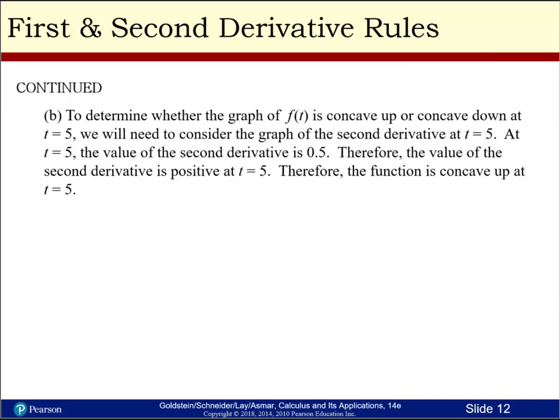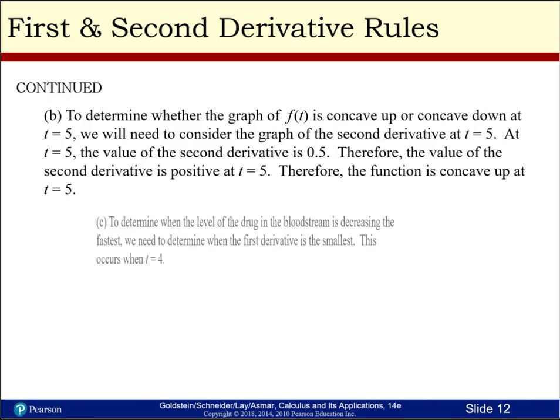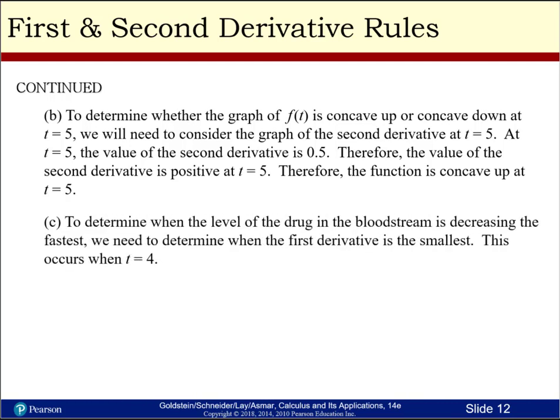To determine whether the graph of f of t is concave up or down, we consider the second derivative at t equal 5. At t equal 5, the value of the second derivative is 0.5, which is positive, so we know it's concave up. To determine when the level of drug in the bloodstream is decreasing the fastest, we determine when the first derivative is the smallest, which occurs when t is 4. If you have any questions, be sure and email me. Have a wonderful day.